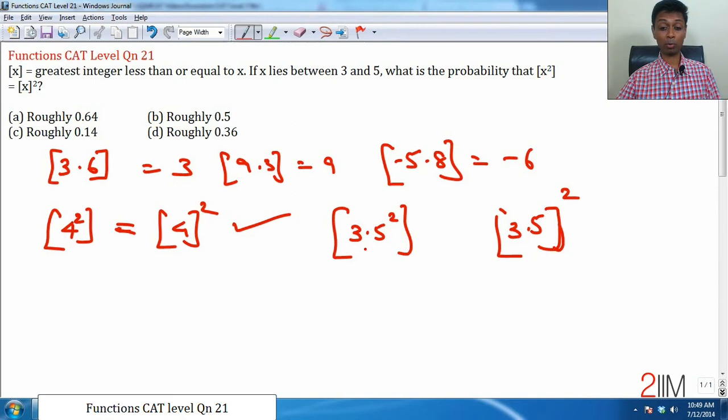Let us take another example, maybe integers work well. Let us take greatest integer of 3.5 square and compare it with greatest integer of 3.5 the whole square. This is 12.25, this value is 12, this is just 3 square 9, these two are not equal. It is 4, it is equal and 3.5, it is not equal.